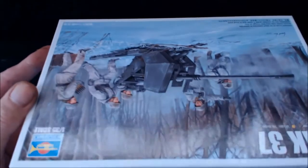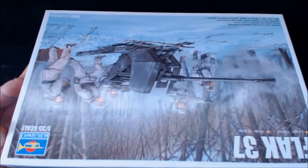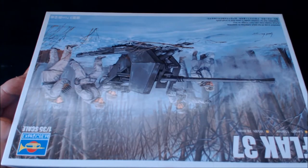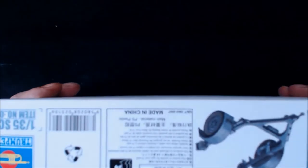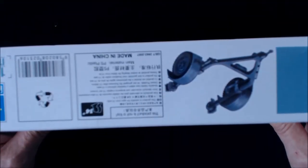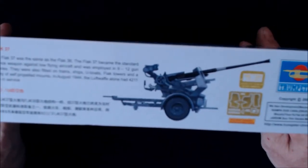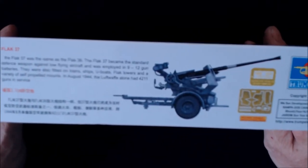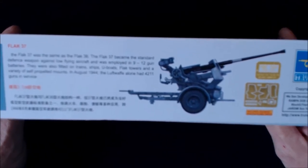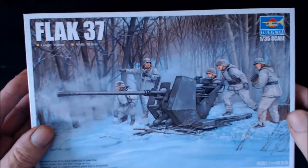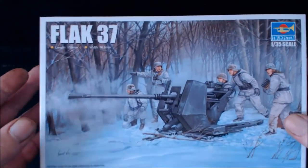Box art, nice box art. On the side, all we have is a picture of the trailer. And on the far side, we have a picture of the actual finished gun on the trailer and just showing you that there is some PE. A little bit of general information about the Flak 37. So let us get into the box.